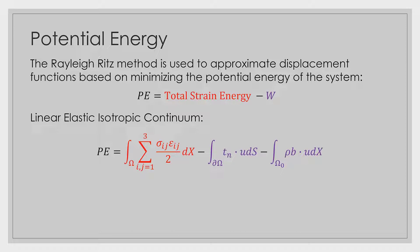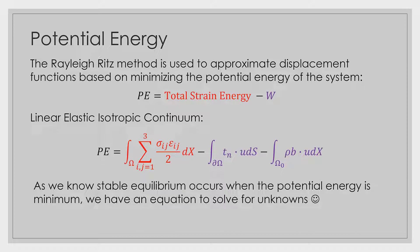Why is finding the potential energy of a system so nice? Well, if we know that for a stable equilibrium this potential energy must be a minimum, what we can do is take our potential energy equation, take the derivative of it and set it equal to zero. We have an equation, and we can solve for the unknowns.